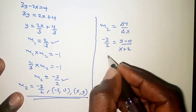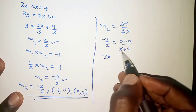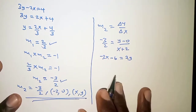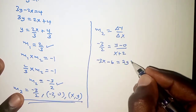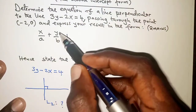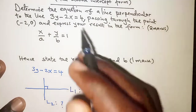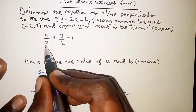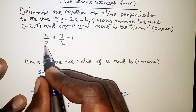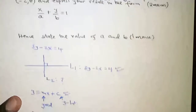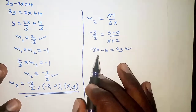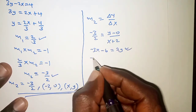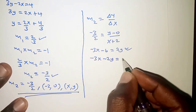Cross-multiplying gives negative 3 times the whole of x plus 2, which is negative 3x minus 6, equals 2y. We are required to express this equation in the form x over a plus y over b equals 1, the double intercept form, where a and b represent the x and y intercepts respectively. Rearranging gives negative 3x minus 2y equals positive 6.